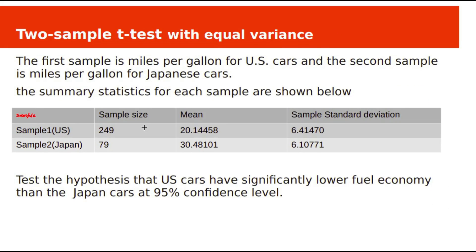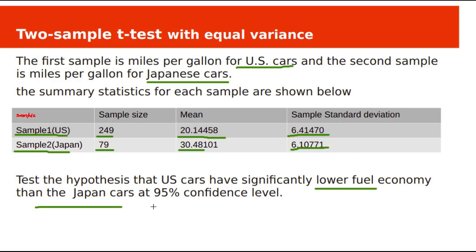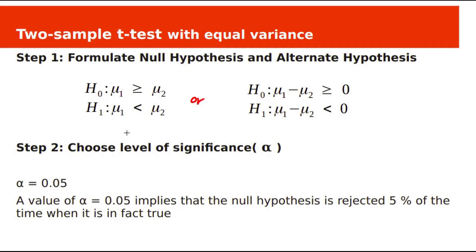Let's see another example. We have two samples: US cars and Japan cars fuel economy data. The first sample is US cars fuel economy with sample size 249 and mean 20.14458 miles per gallon, and sample standard deviation for the second sample is 6.10771. Test the hypothesis that US cars have significantly lower fuel economy than Japan cars at 95% confidence level, where mu1 is the US sample mean and mu2 is the Japan sample mean.